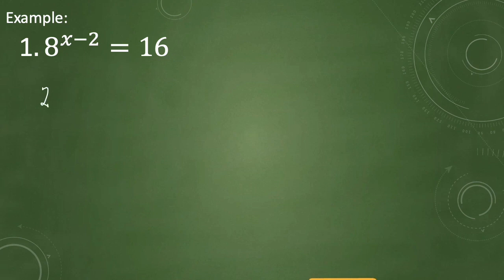2 raised to the 3rd power gives us 8. So that's 2 raised to 3, times x minus 2, equals 16, which we can rewrite in exponential form as 2 raised to the 4th power. That also gives us 16. Now we have the same base.